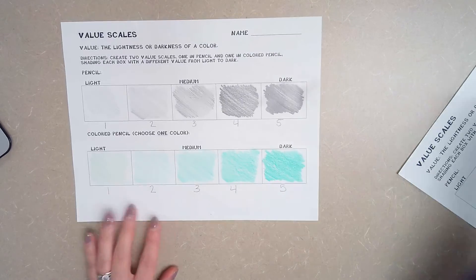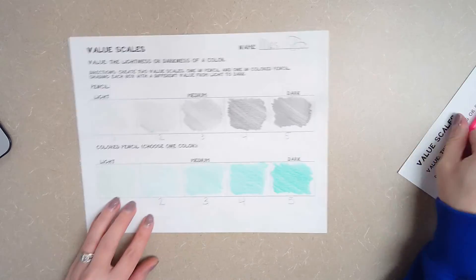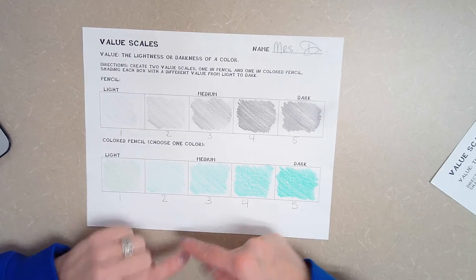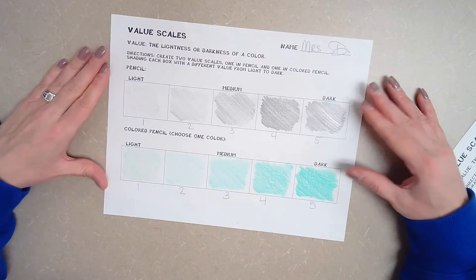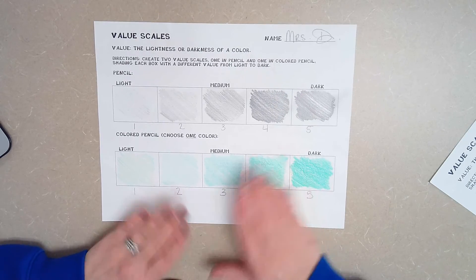Once you have this done, write your name at the top of your paper, then take a picture of the value scale and upload it for this week's skill builder. This is all that's due this week. Just this worksheet.